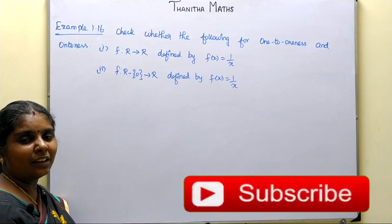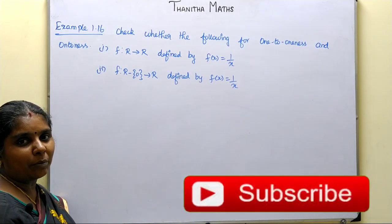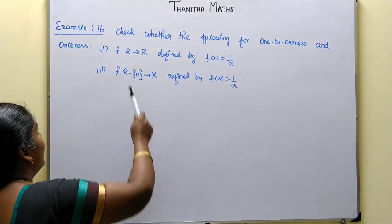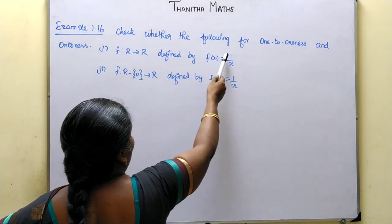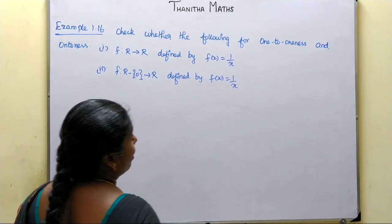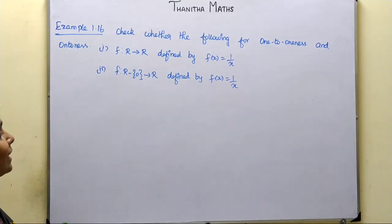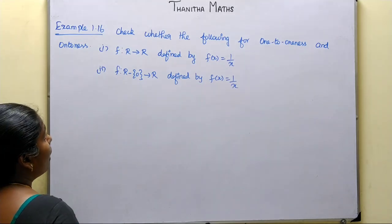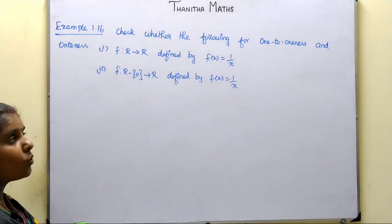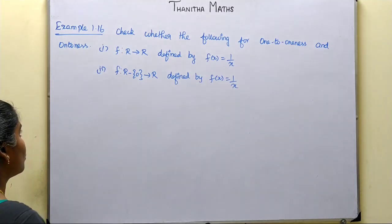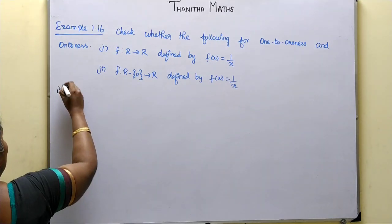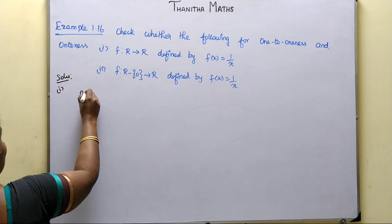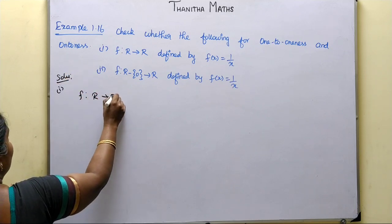Welcome students. In example 1.16, we check whether the following function is 1-to-1 and onto. The first function is from R to R, defined by f of x is equal to 1 by x.